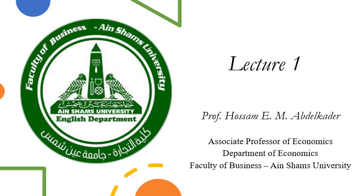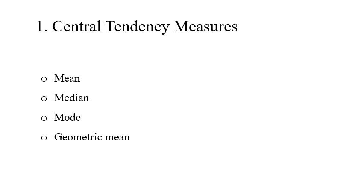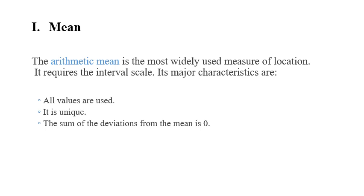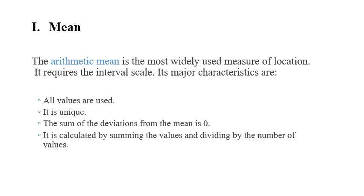Hi everyone, today we are working with Lecture 1 in Econometrics. Today we will go through the main measures of central tendency and measures of dispersion as an introduction for econometrics. Central tendency measures are mainly concerned about mean, median, mode, and geometric mean. In the case of mean or arithmetic mean, it is the most widely used measure of location and it has some characteristics like all values are used in calculation, it is unique, the sum of deviation from the mean is zero.